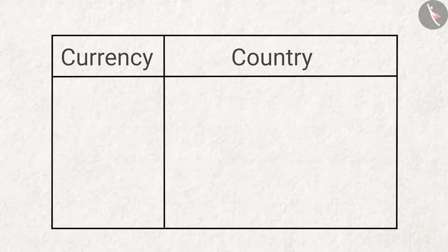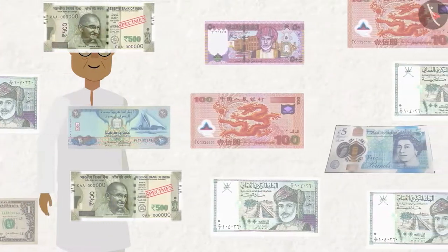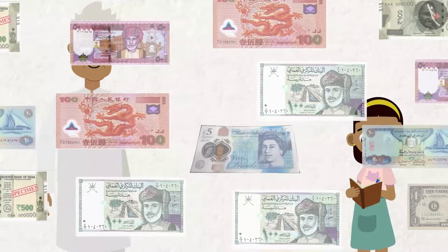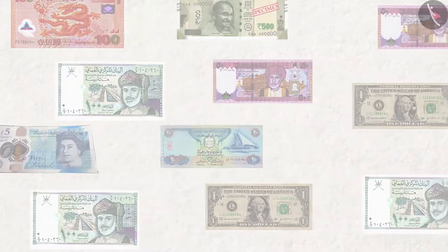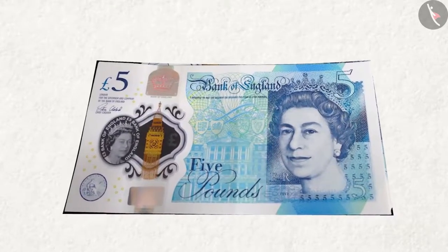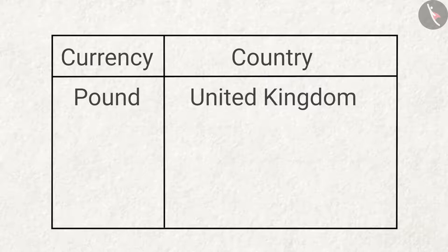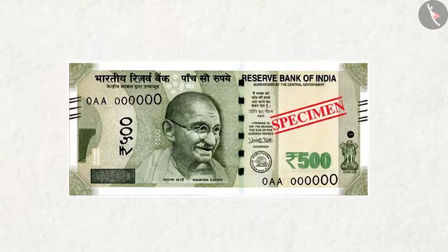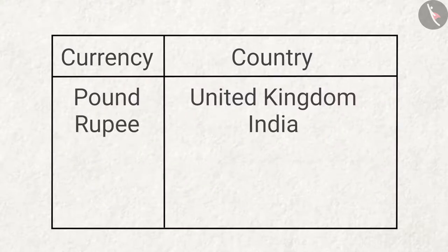Zia made a table. Grandpa now tells her about the notes one by one and Zia writes them on her table. Let us also look at the currencies one by one. Which country has this note with a picture of a woman? What is the name of this currency? It is called pound and it is the currency of the United Kingdom. From which country is this currency and what is it called? This is the currency of India — it is called the rupee.